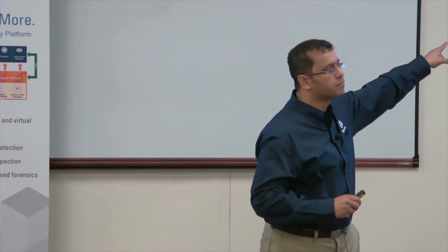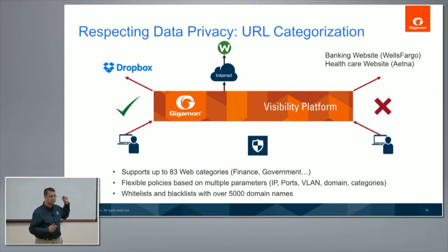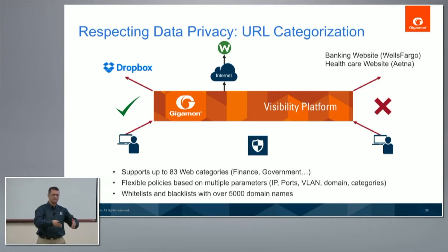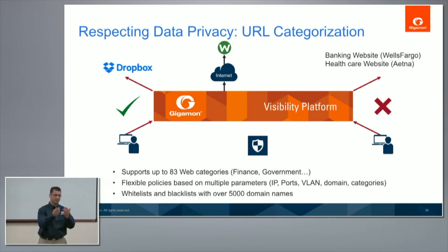We provide up to 83 web categories so the administrator can pick and choose. We have flexible policies to decide what goes to the decryption engine and what just gets bypassed. We also have whitelists and blacklists — for example, you can whitelist internal servers you know are safe to just pass through, or blacklist a domain you believe is malicious and force decryption regardless of policy.